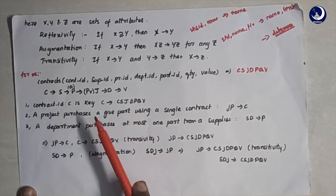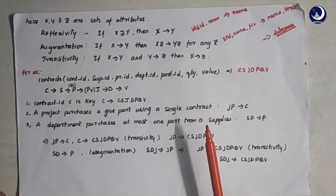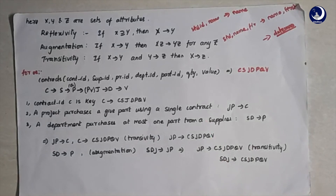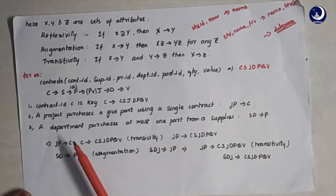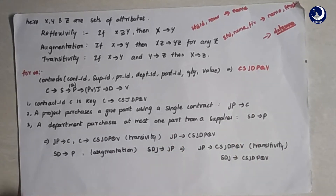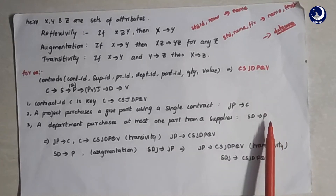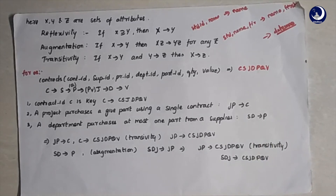The third assumption is that a department purchases at most one part from one supplier, so SD determines P. Now, using the three Armstrong Axioms we can compute the underlying implied FDs. Since JP determines C, and C determines CSJDPQV, by transitivity JP determines CSJDPQV.